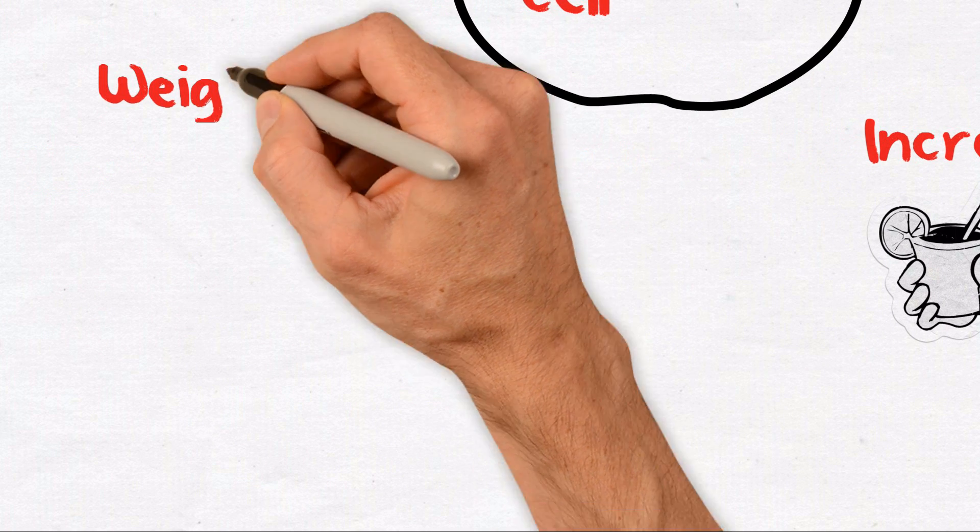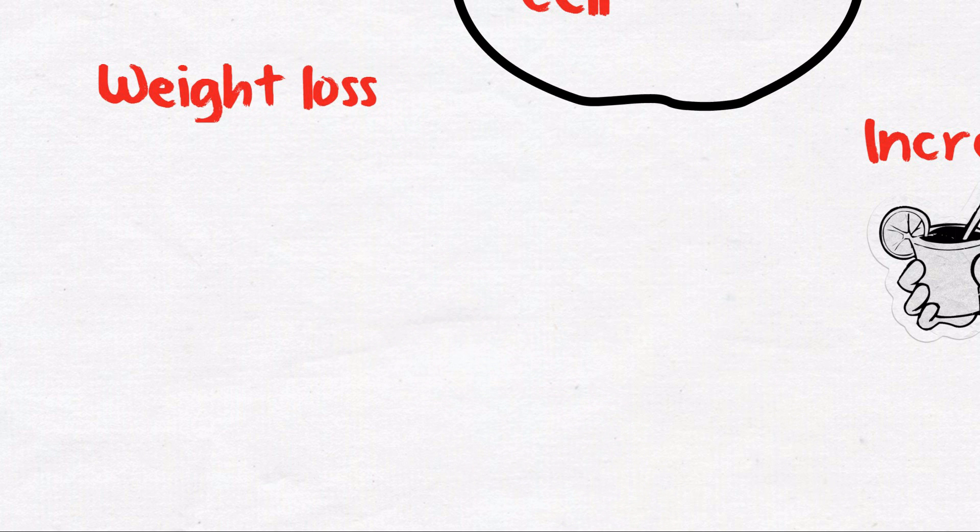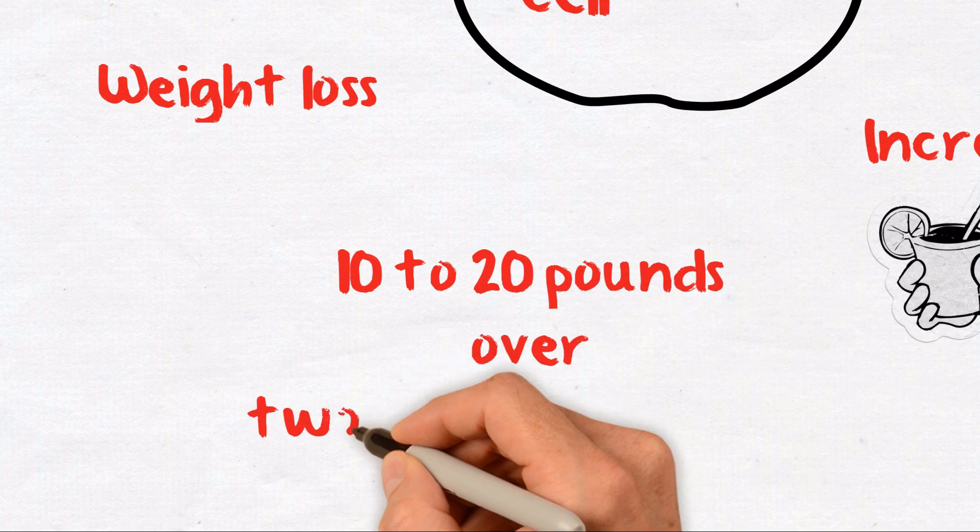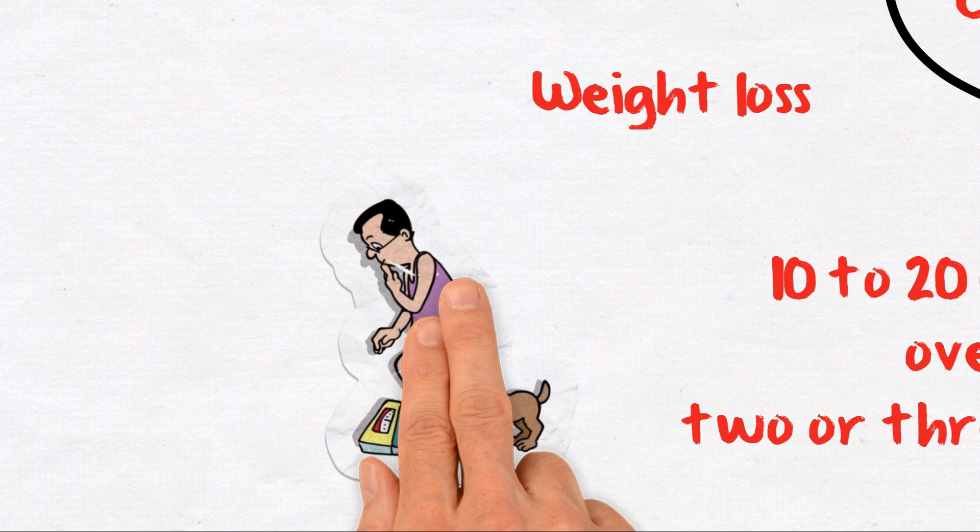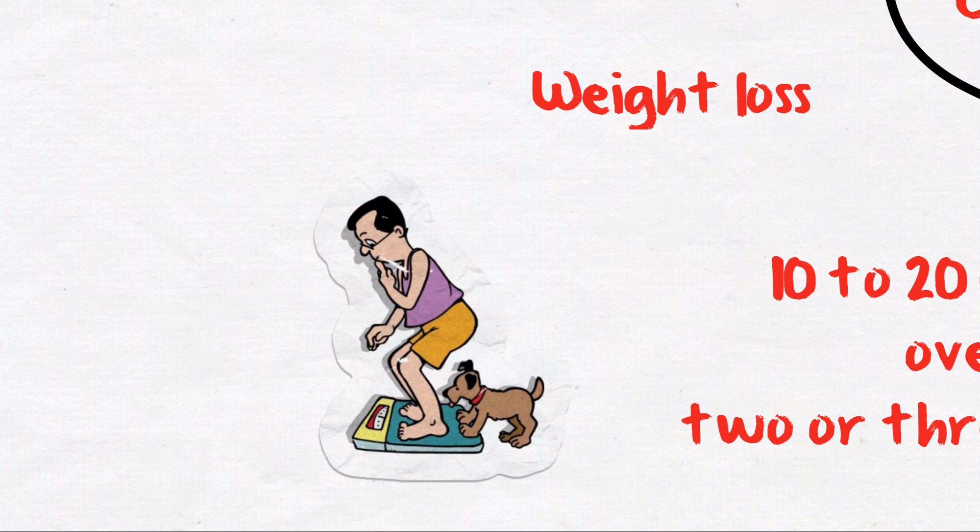Weight loss: Overly high blood sugar levels can also cause rapid weight loss, say 10 to 20 pounds over two or three months. But this is not healthy weight loss because the insulin hormone isn't getting glucose into the cells where it can be used as energy. The body thinks it's starving and starts breaking down protein from the muscles as an alternate source of fuel.